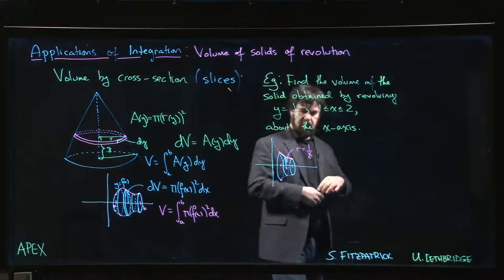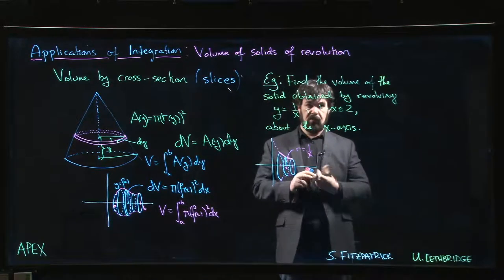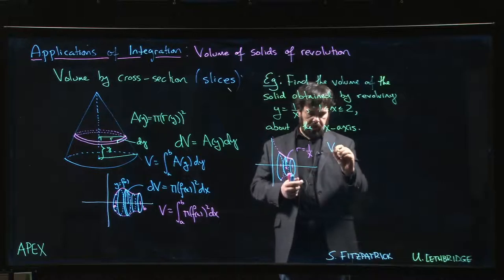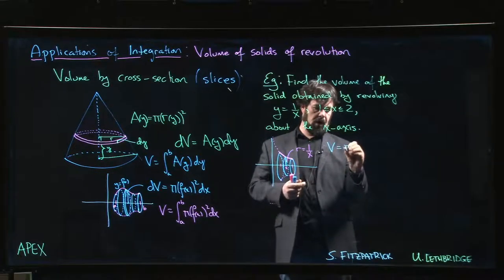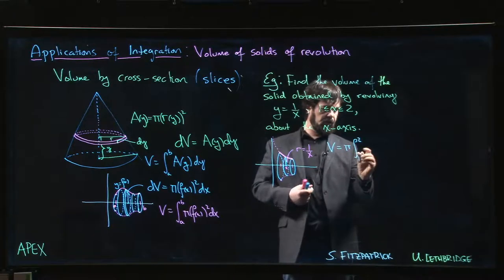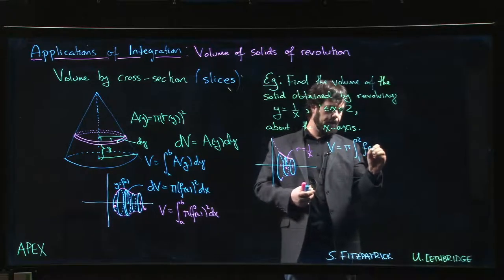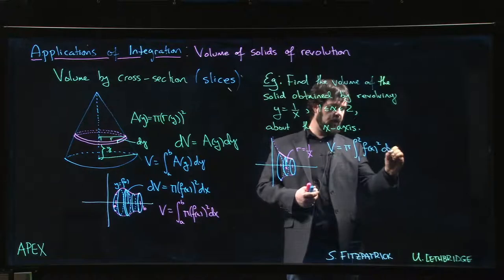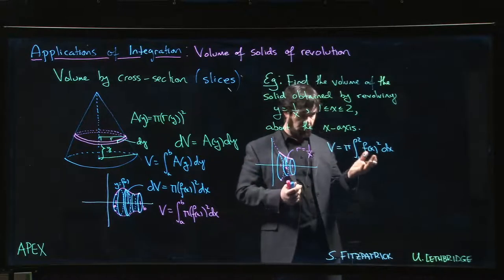The volume formula is sitting right here. So we can actually set this up. So we say the volume is pi. We can bring the pi out front. It's a constant. Times the integral from 1 to 2 of f of x squared dx, where this time f of x is 1 over x.